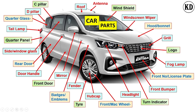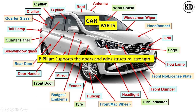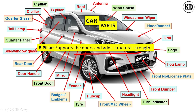The next component is the C pillar. The function of the C pillar is to support the rear window and the quarter window as well as the roof. The next component is the B pillar. Its function is to support the front door and rear door as well as the roof.